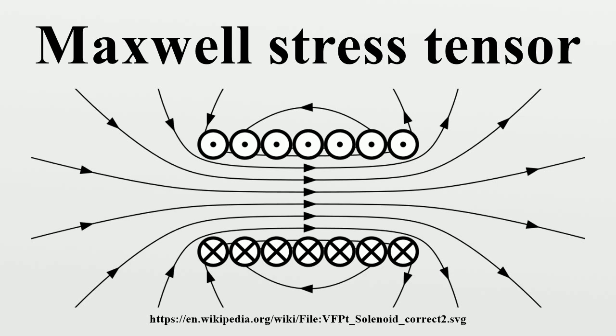In Gaussian CGS units, the tensor is given by a corresponding formula where H is the magnetizing field. An alternative way of expressing this tensor uses the dyadic product, where the last tensor is the unit dyad.